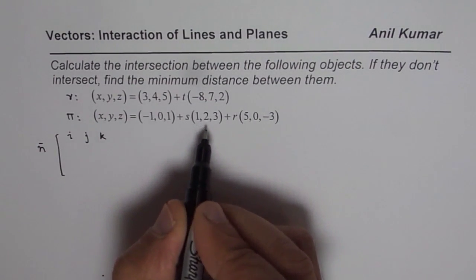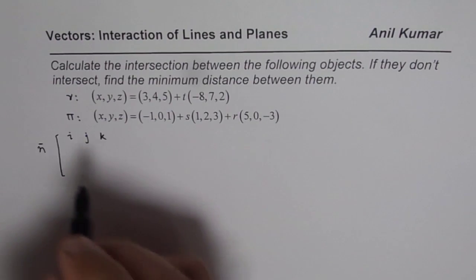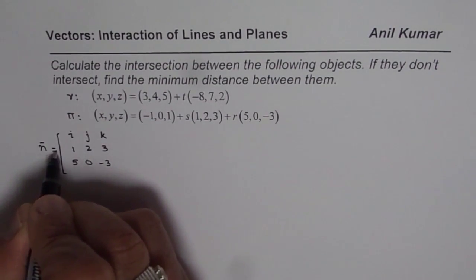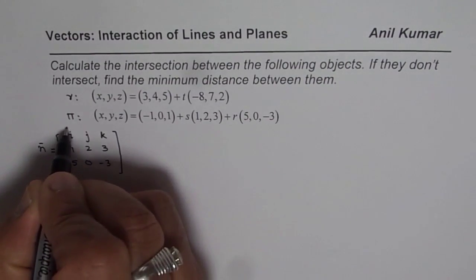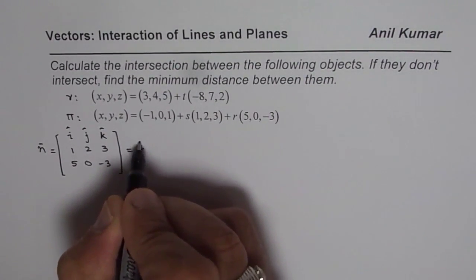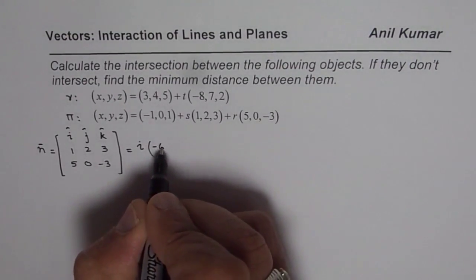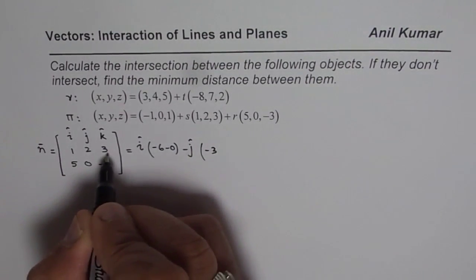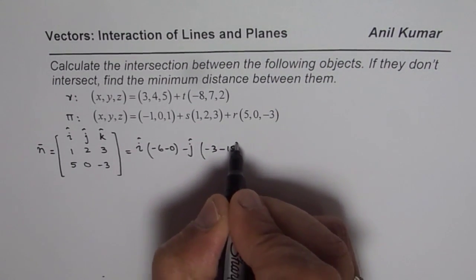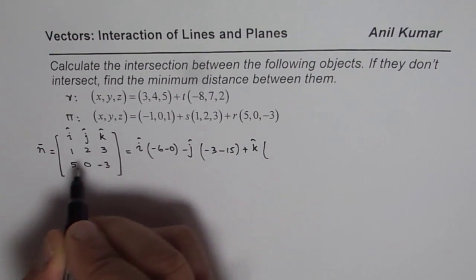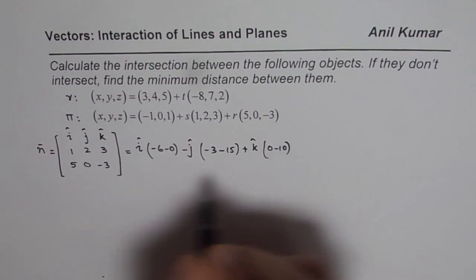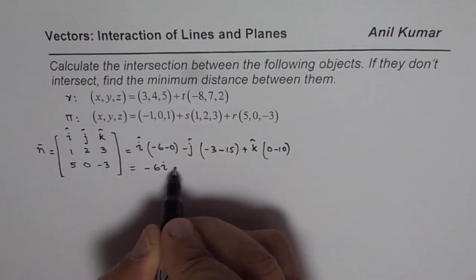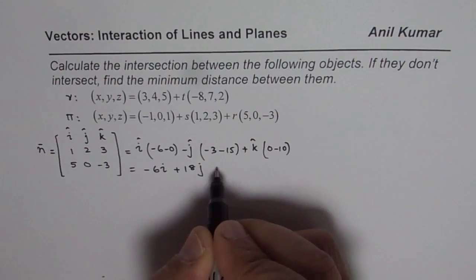We find the cross product using a matrix. We are computing the cross product of (1, 2, 3) and (5, 0, -3). Using unit vectors i, j, k: i gives 2×(-3) - 0 = -6; minus j gives (-3 - 15) = -(-18) = +18; and k gives minus 10.